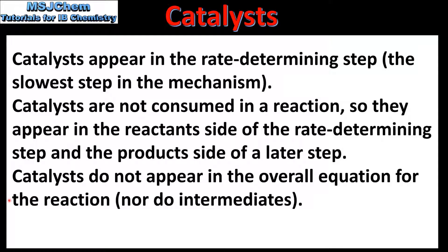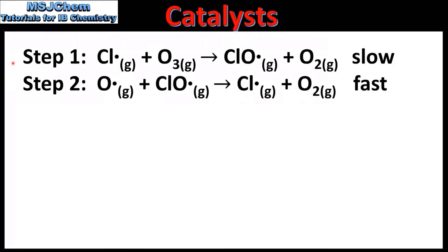Next we look at some example reaction mechanisms. Here we have our first reaction mechanism — a two-step mechanism with the first step being the slow step, which is the rate determining step. The first step involves the reaction between a chlorine radical and an ozone molecule. The products of the first step are the chlorine monoxide radical and a molecule of oxygen. In the second step, an oxygen radical reacts with the chlorine monoxide radical to form a chlorine radical and a molecule of oxygen. We can see that the chlorine radical appears in the reactant side of the slow step and is regenerated in the product side of the next step.